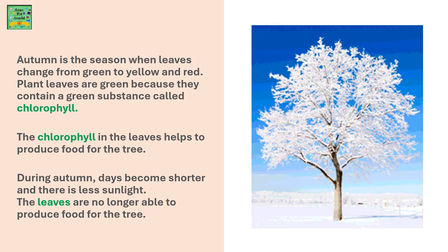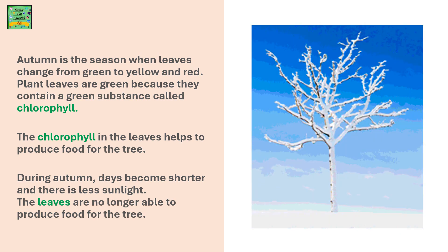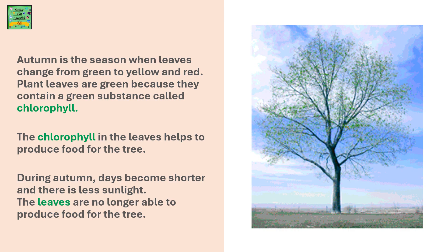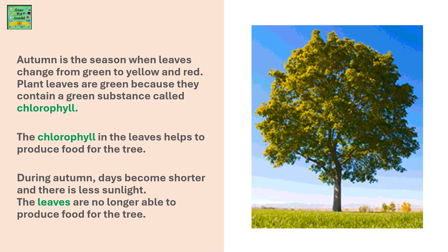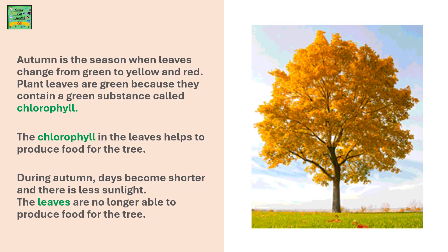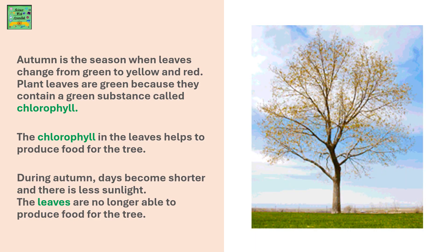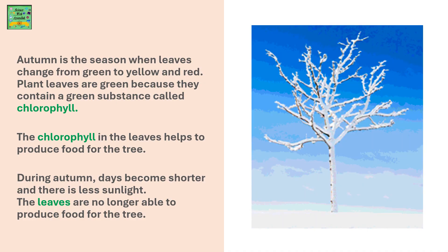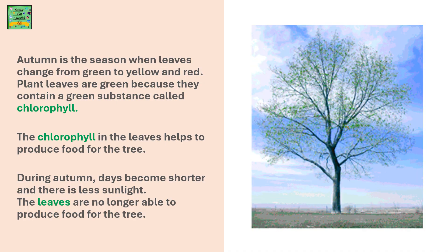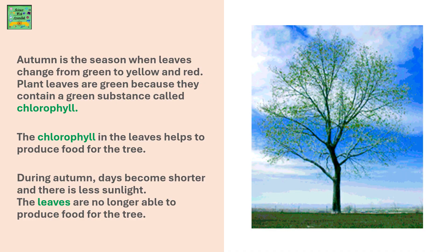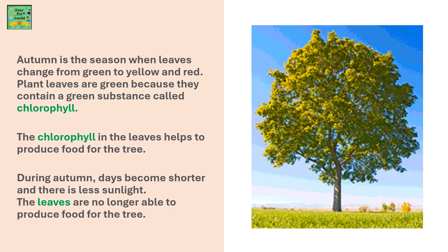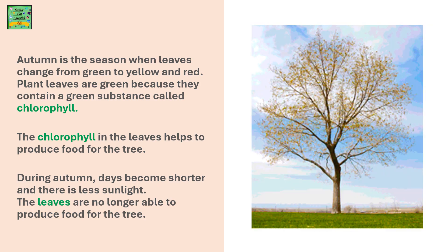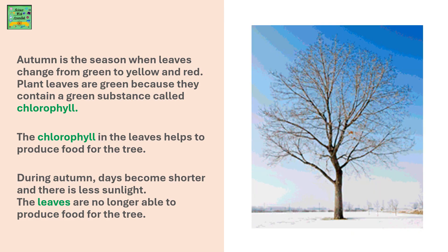Autumn is the season when the leaves change from green to yellow and then to red. Plants contain a green pigment known as chlorophyll that gives the green color to the leaves. The chlorophyll in the leaves helps to produce food for the tree. During autumn, days become shorter and there is less sunlight, so the leaves are no longer able to produce food for the tree.